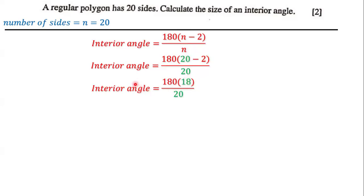And so that means the interior angle is equal to 180 multiplied by 18, all over 20. Now, what is 180 multiplied by 18? Well, 180 multiplied by 18 is 3,240. And 3,240 is the numerator, but the denominator is still 20.